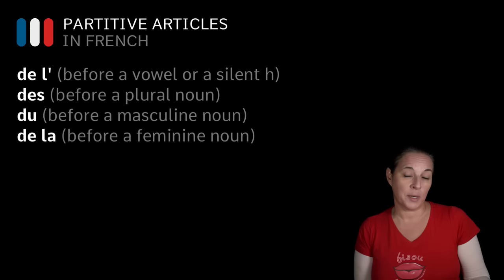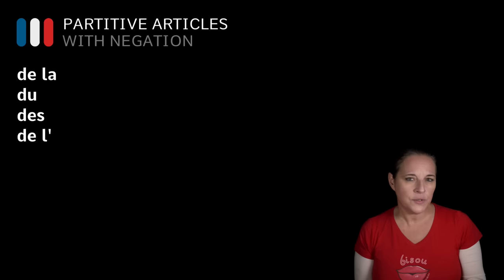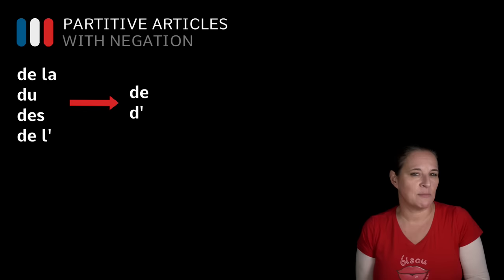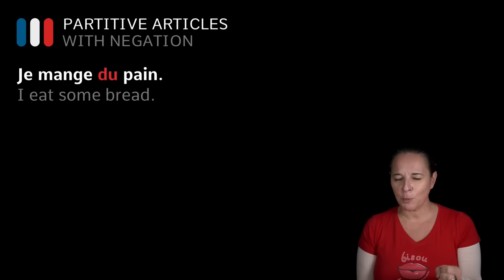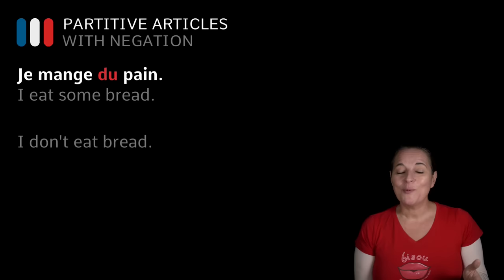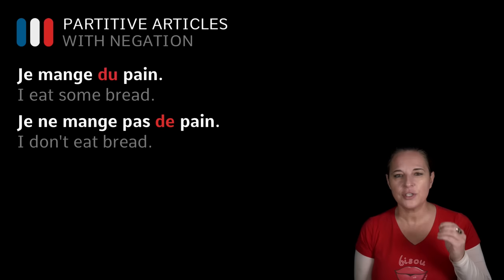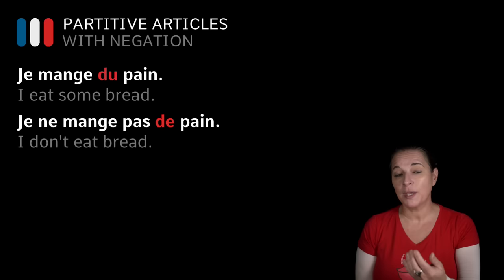Now, what happens when we use partitive articles with a negation? When using a negation in a sentence, the partitive articles DE LA, DU, DES, and DE L' become DE or D'. For example, 'Je mange du pain' — I eat some bread. But if we want to say I don't eat bread, we say 'Je ne mange pas DE pain'. You couldn't say 'Je ne mange pas pain' — you've got to have the partitive article. And it can't be DU; it has to be DE because we're using negation.